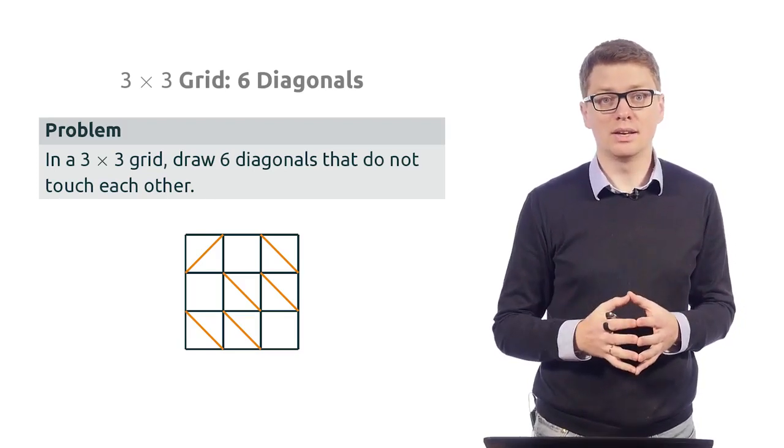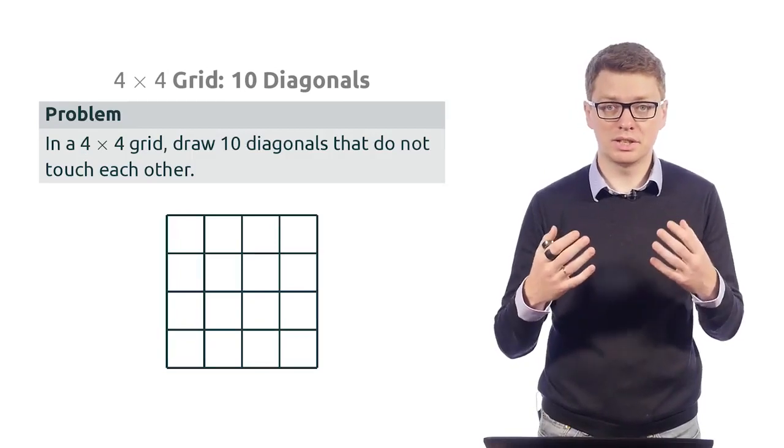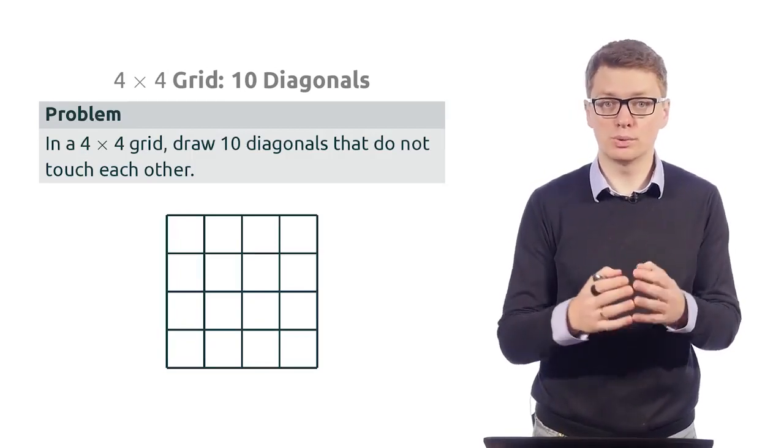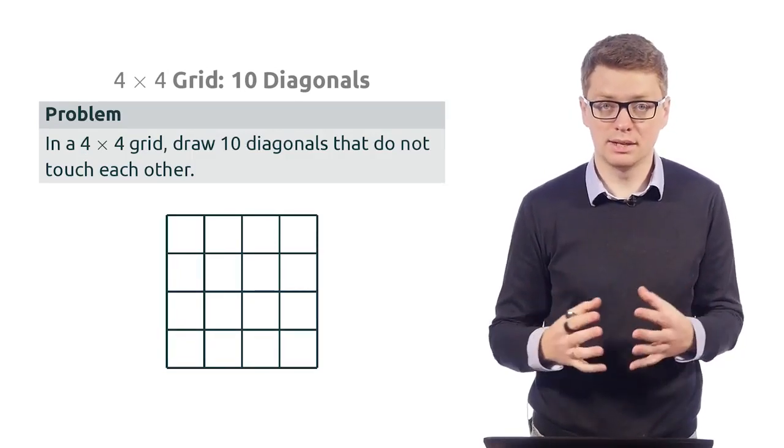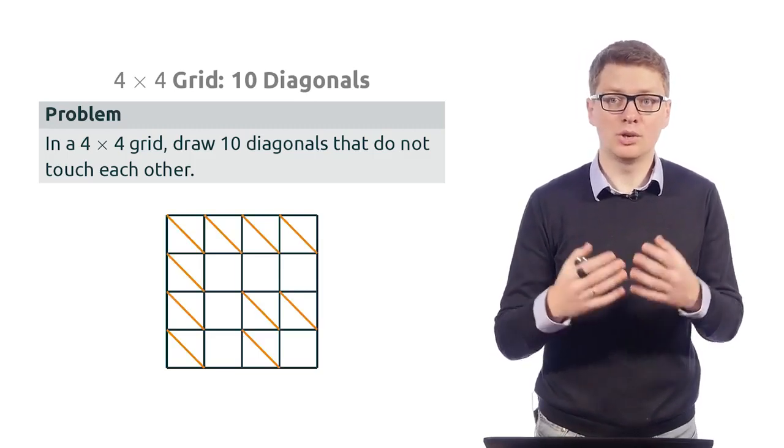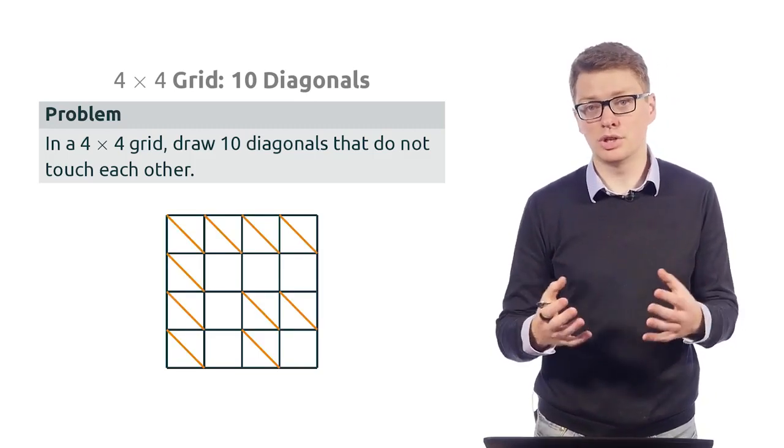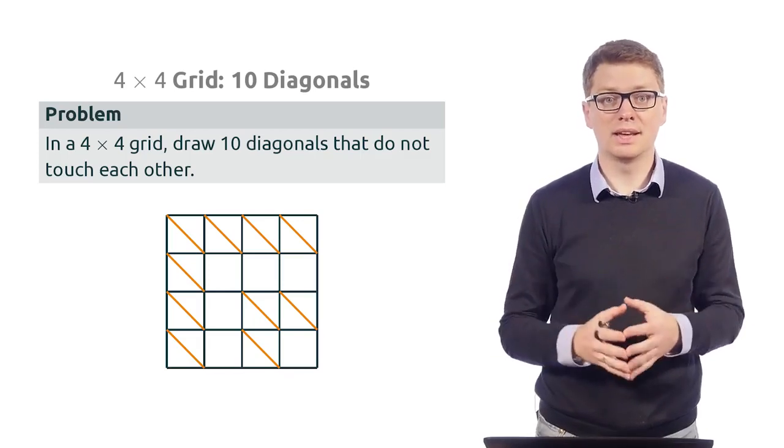Now let's gradually increase the size. Let's consider a four by four board. Now the question is to place ten diagonals. It is already not so simple, but here you are. This is a solution where there are ten diagonals.